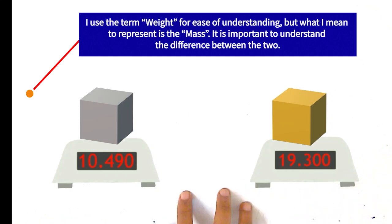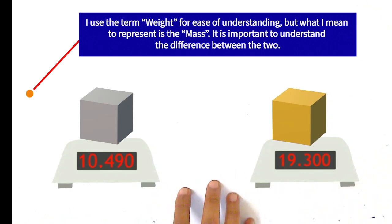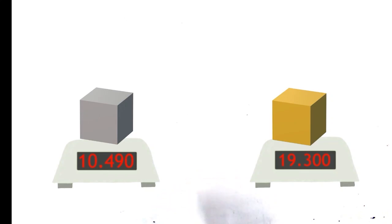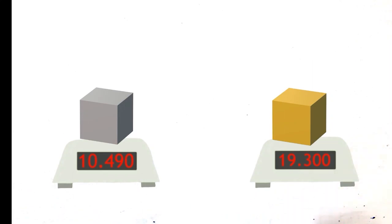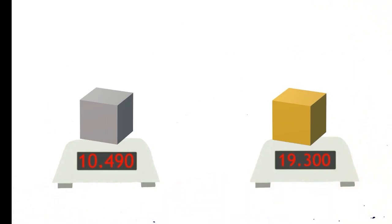So let's see — it is one cube, one size, one volume, but one cube is less weight and another is more. Almost 9 grams difference. So one is the size of a gold cube and one is the size of a silver cube.